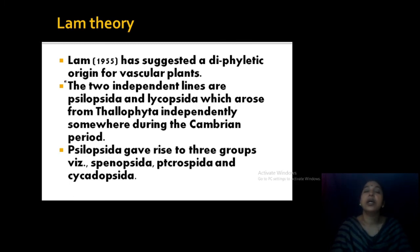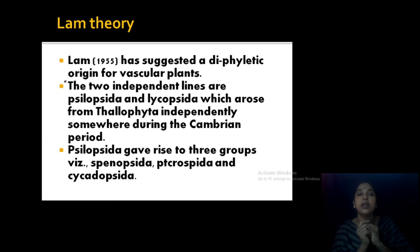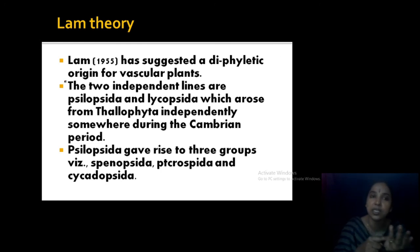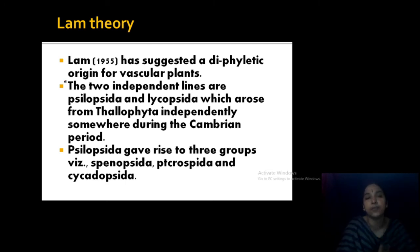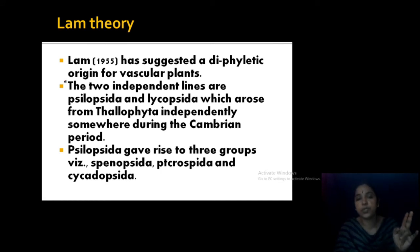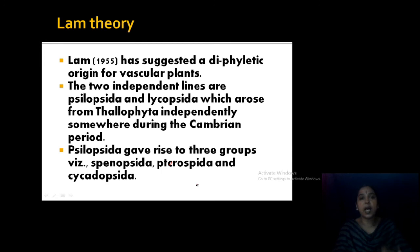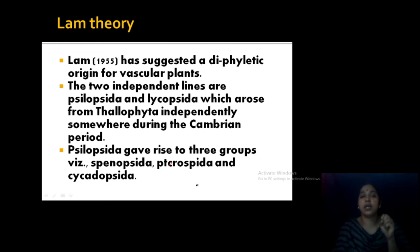According to Lam's theory, there is a diphyletic origin — two independent lines. Xylopseida and Lycopseida developed independently from Thallophyta. From Xylopseida, another group later developed. According to Mehra's theory, the ancestors of land plants are found among green algae. He opposed polyphyletic origin but agreed that different groups of thallophytes diverged from the very beginning, all having some common ancestral group.